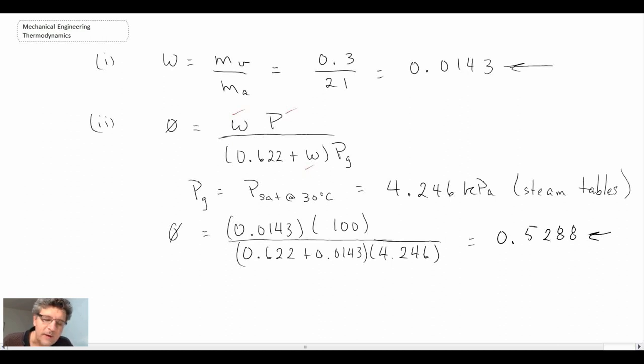The last part, they want us to calculate the volume of the tank. The way that we're going to go about looking at this, we're going to use the ideal gas equation. But we know the mass of dry air, so what we need to do is figure out the pressure associated with the dry air. So that will be our approach.